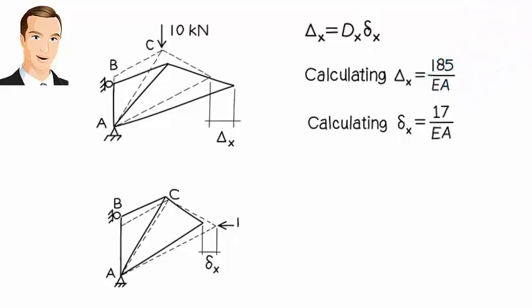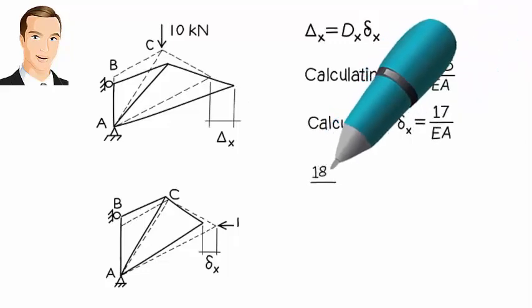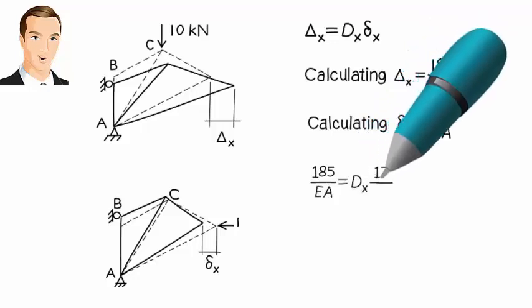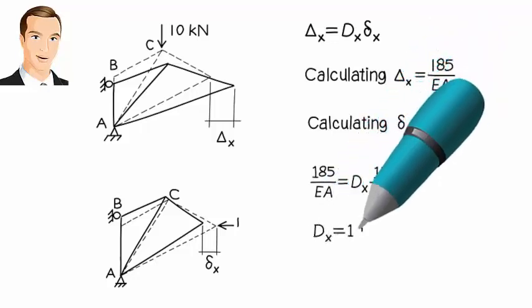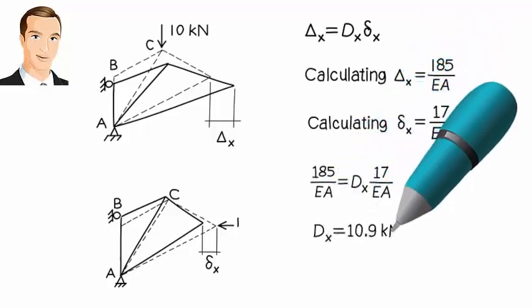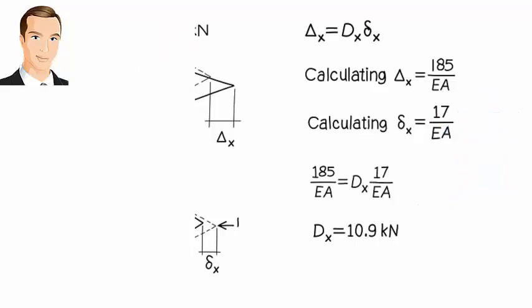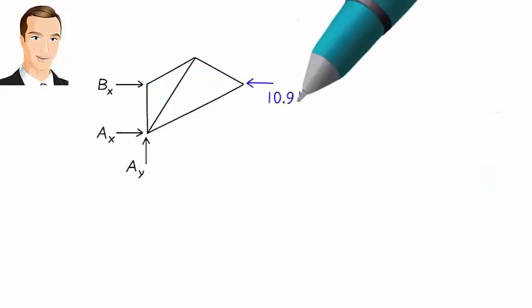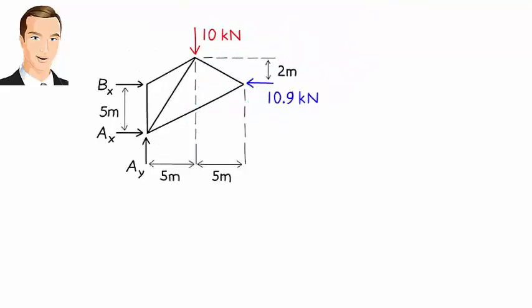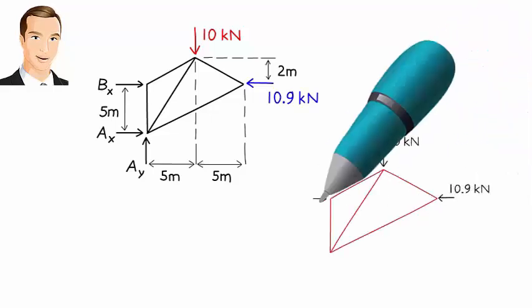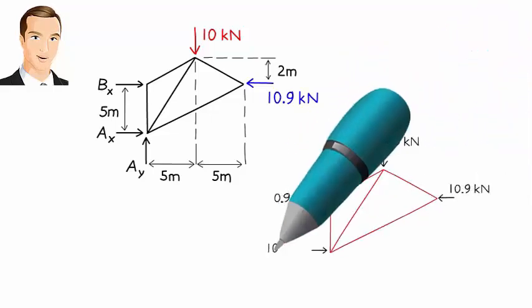We can now write the compatibility equation. Solving the equation for the redundant force, we get dx equals 10.9 kN. Here is the free body diagram of the truss with the known redundant force. We can now use the equilibrium equations to calculate the remaining support reactions, or use the method of joints to analyze the entire truss.